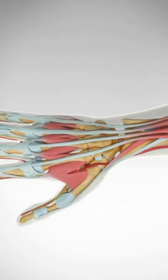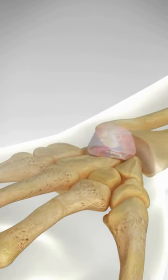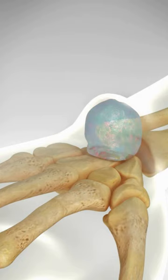Ganglion cysts are non-cancerous lumps that most often occur on the back of the wrist. This collection of jelly-like fluid escapes from an underlying joint or tendon sheath and can be painful if it presses on a nerve.